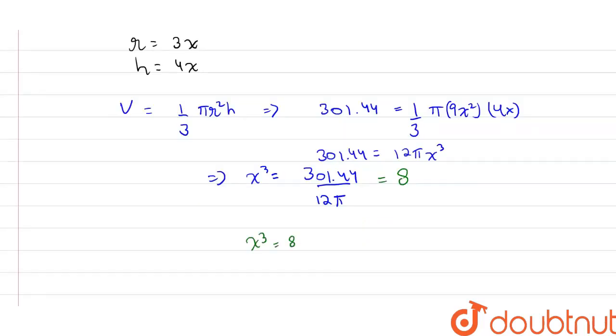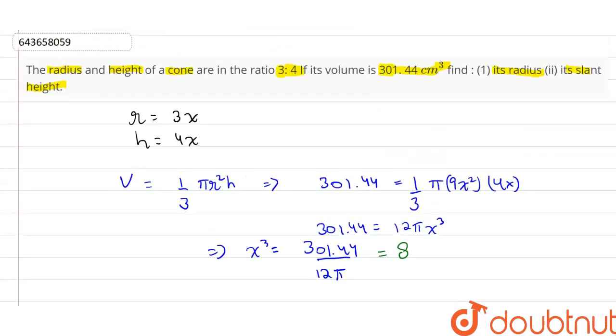Now x³ = 8, which implies x = 2. Therefore, we know that radius is equal to 6 cm and height is equal to 8 cm.